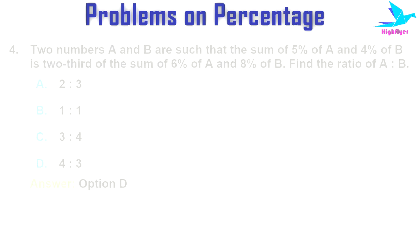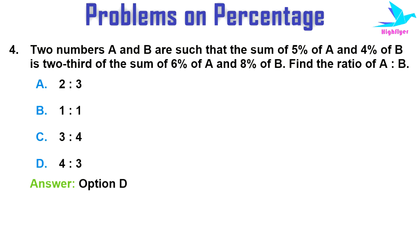Next question: two numbers A and B are such that the sum of 5 percent of A and 4 percent of B is two-thirds of the sum of 6 percent of A and 8 percent of B. Find the ratio of A to B. Options are: 2:3, 1:1, 3:4, or 4:3. The right option is D: 4 is to 3.